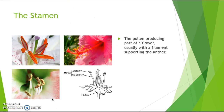The stamen is the pollen-producing part of the flower. There are two different parts to the stamen: the anther and the filament. Since it produces the pollen, if anyone has pollen allergies — like I do, I am allergic to daisies — you can blame the stamen for those allergies.